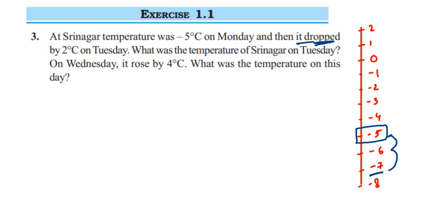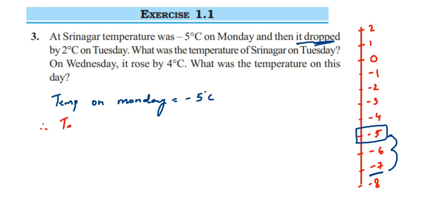Now let me write this out. Temperature on Monday is equal to minus 5 degrees Celsius. They have given that the temperature on Tuesday dropped by 2 degrees Celsius. Therefore, temperature on Tuesday will be: right now it is minus 5 degrees Celsius, and since it dropped we have to subtract 2 degrees Celsius.